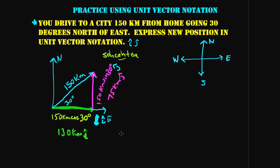Quick note: when plugging these into your calculator, make sure if you're using degrees your calculator is in degree mode. Go to mode and select degrees — if you're in radians mode you'll get incorrect answers. So this position vector is 130 i-hat plus 75 j-hat kilometers.